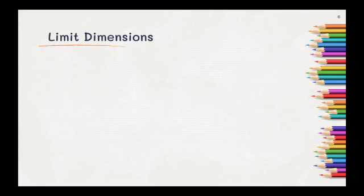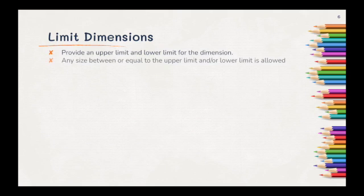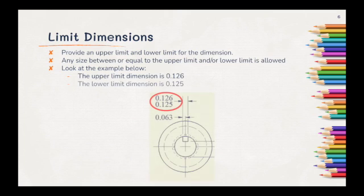Let's start by taking a look at limit dimensions. Limit dimensions provide an upper limit and a lower limit for the dimension. Any size between or equal to the upper limit or lower limit is allowed. Let's take a look at the example below. The upper limit dimension is 0.126 and the lower limit dimension is 0.125. That means any value between 0.126 and 0.125 would be an acceptable value for this specific dimension.